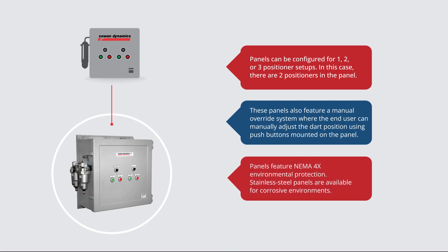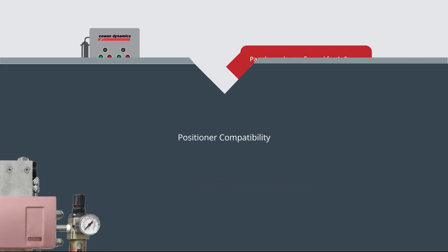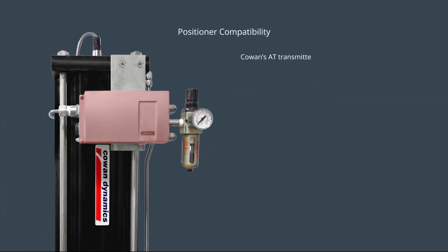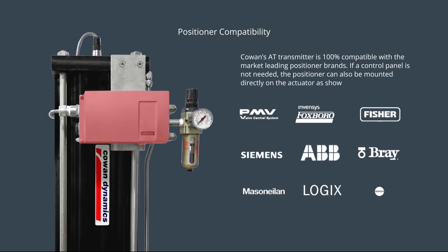Panels feature NEMA 4 environmental protection. Stainless steel panels are also available for corrosive environments. Cowan's AT transmitter is 100% compatible with the market-leading positioner brands. If a control panel is not needed, the positioner can also be mounted directly on the actuator as shown.